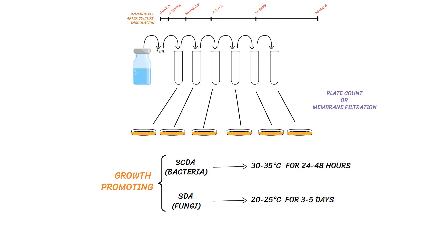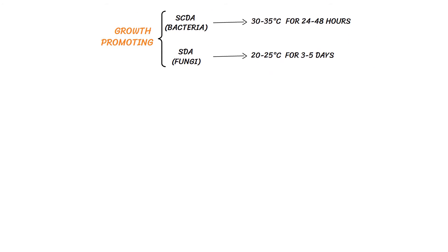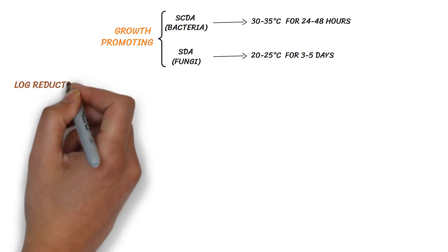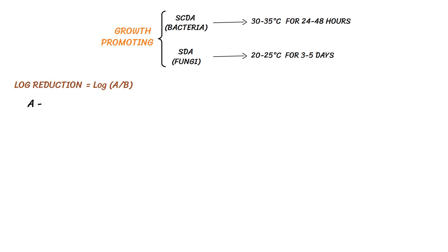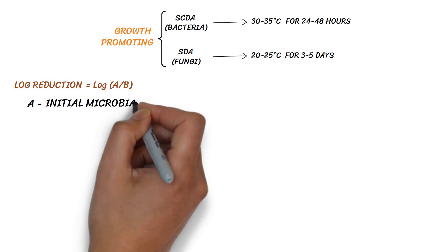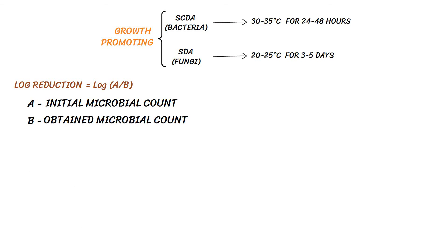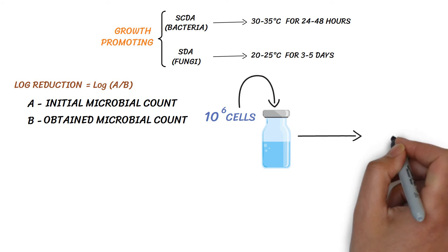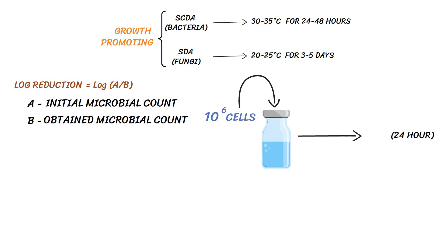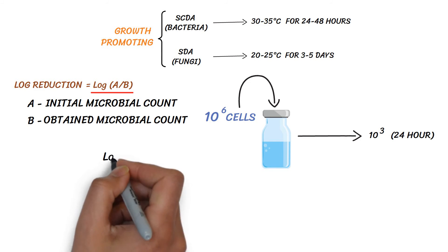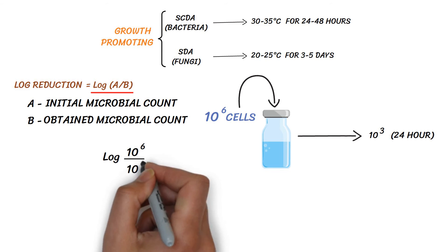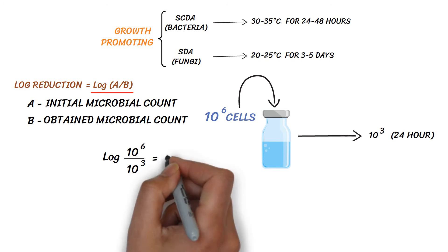After the incubation period, count the number of surviving microorganisms and calculate the log reduction using the formula: log(A/B), where A represents the initial microbial count and B represents the obtained microbial count at the current time point. For example, if we inoculate 10 to the power of 6 cells and obtain a count of 10 to the power of 3 at the 24-hour time point, the log reduction will be log(10⁶ / 10³), which gives a 3-log reduction.